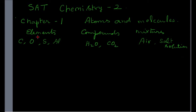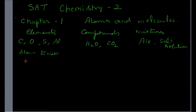Now let us come back to elements. If you take a piece of carbon and go on dividing it until you reach a particle which cannot be divided further, we say you have got an atom of carbon. This atom of carbon possesses all the properties of carbon. So an atom can be defined as the tiniest particle of an element that possesses all the properties of the element.